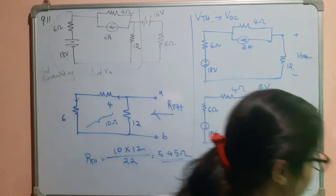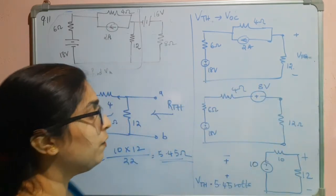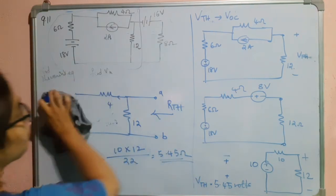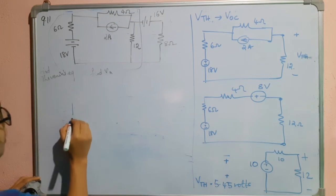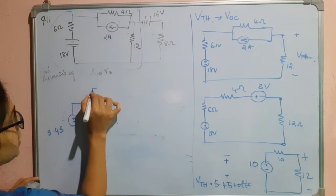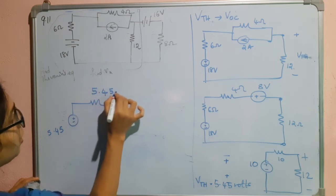So, now, let us replace this. According to part B, we have to reconstruct this circuit. So, let us reconstruct. So, here we have Thevenin's voltage 5.45. Here, we have Thevenin's resistance in series 5.45 ohm.